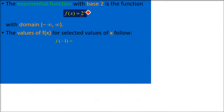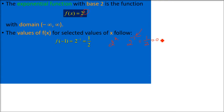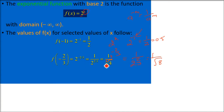For the exponential function with base 2, the domain is negative infinity to infinity — all real numbers. Now let us also check negative values. For 2 to the power minus 1, we get 1/2, which is 0.5. For 2 to the power minus 2/3, we write it as 1 over 2^(2/3), which equals 1 over the cube root of 4, or equivalently 1 over the cube root of root 4.